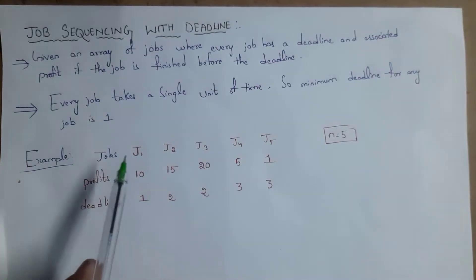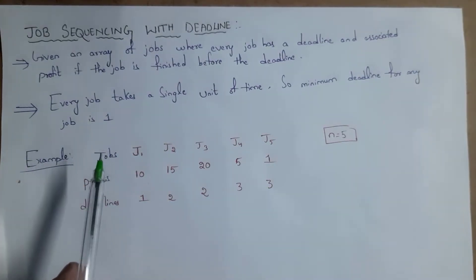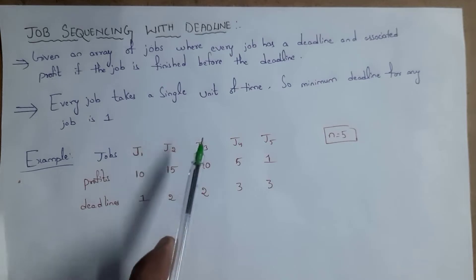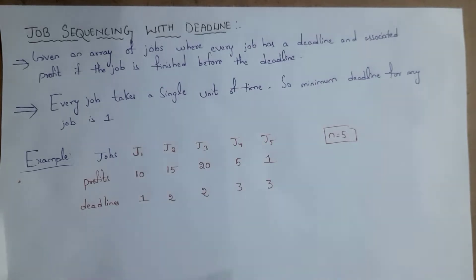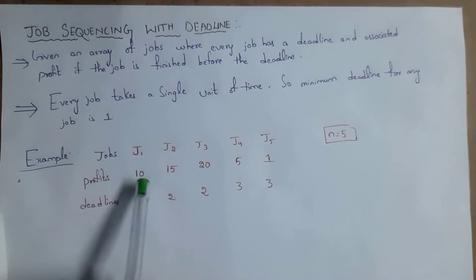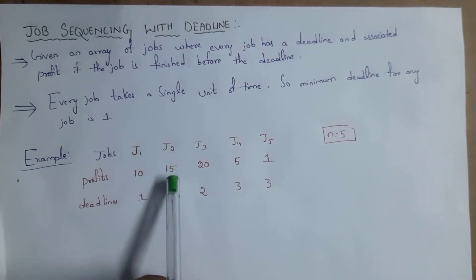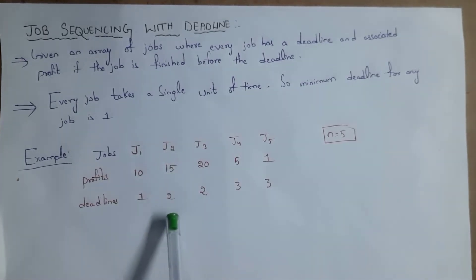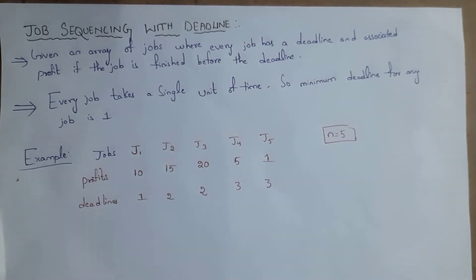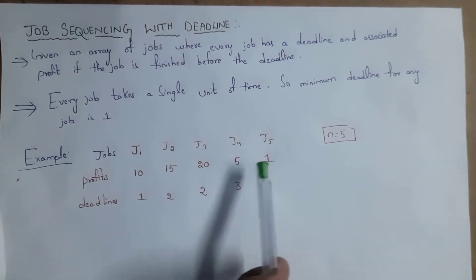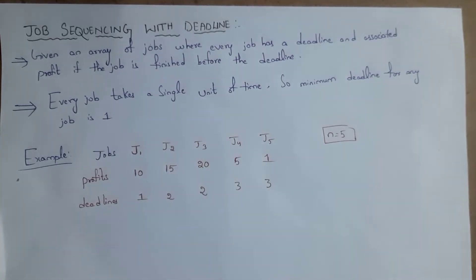In this example, there are five jobs: J1, J2, J3, J4, and J5. For each job there is a profit and a deadline. For job J1, profit is 10 and deadline is 1. For job J2, profit is 15 and deadline is 2. Similarly, for jobs J3, J4, and J5 there is a profit as well as a deadline.